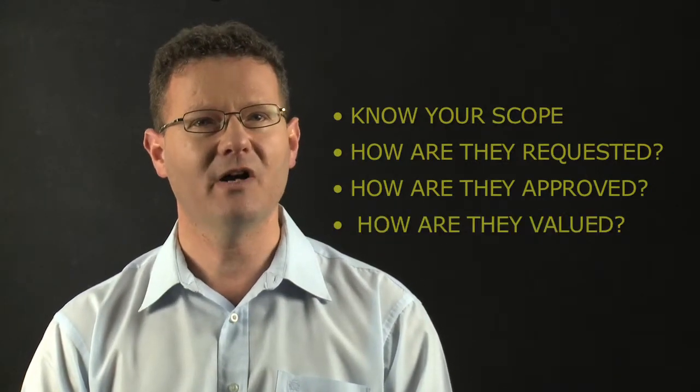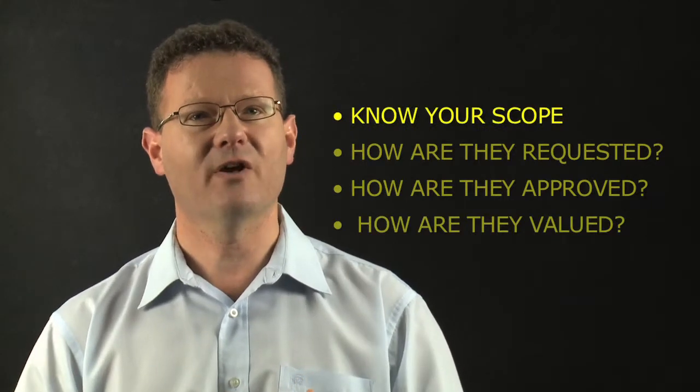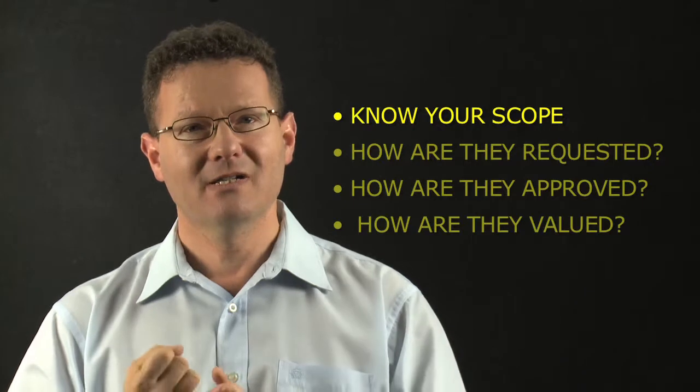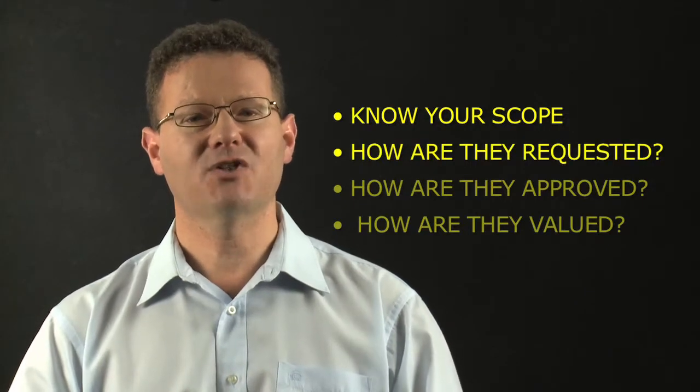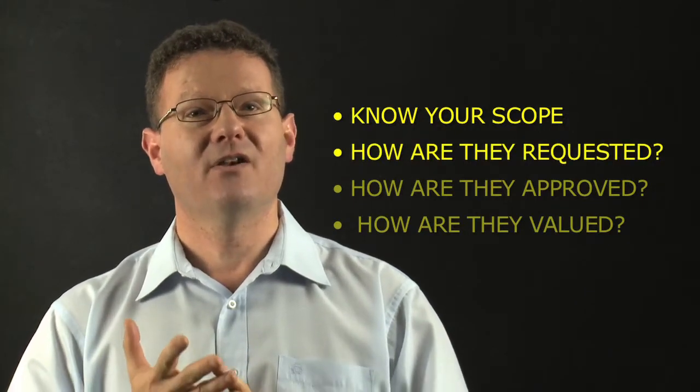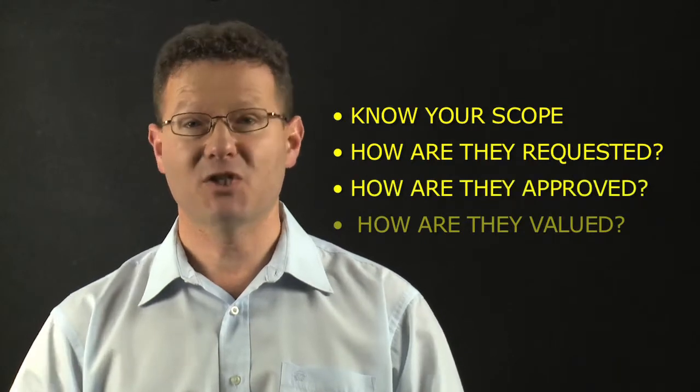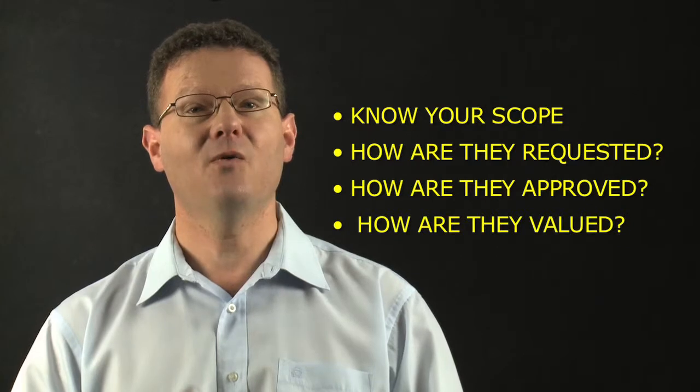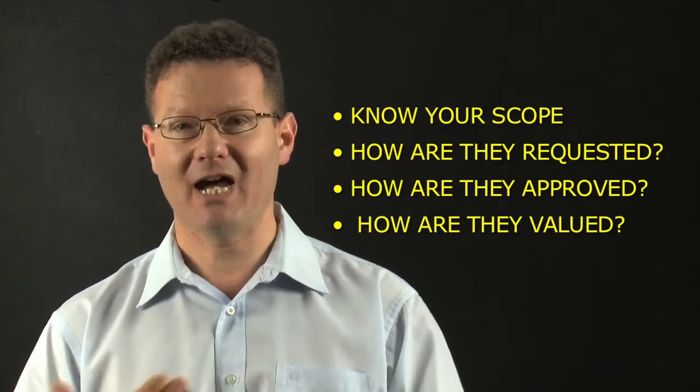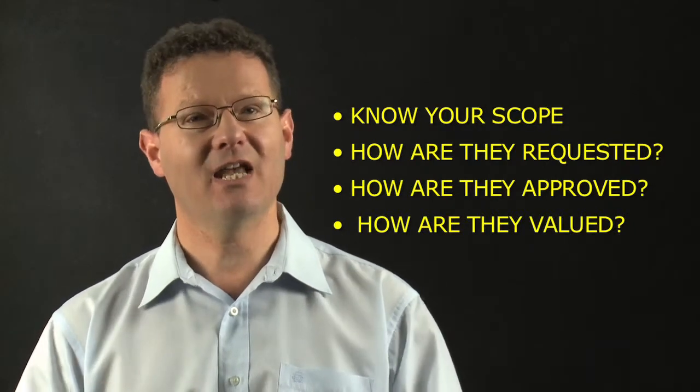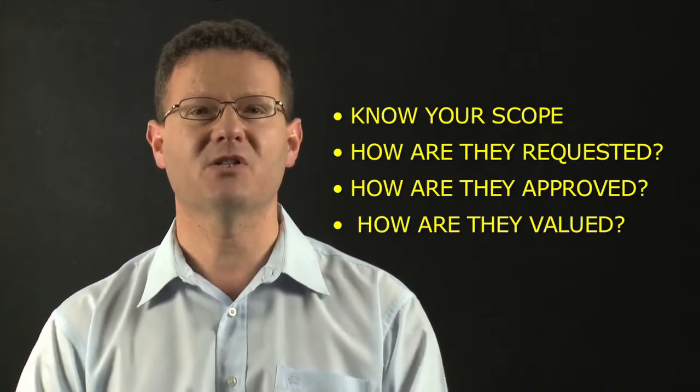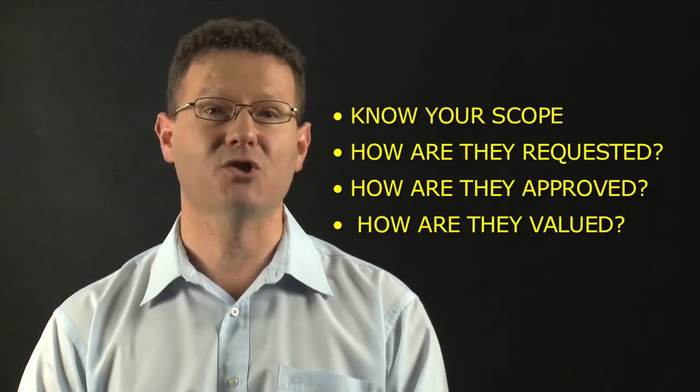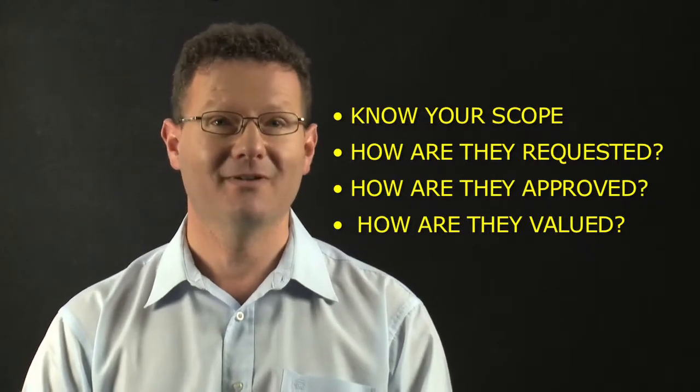So simply to summarize, know that it is a variation. So know that it is additional scope and understand your scope. Secondly, know how variations are requested. Thirdly, know how variations are approved. What is the approval process? And finally, know and agree how variations are to be valued. If you can get your head around those things and build it into your processes with your client, the arguments over variations should greatly reduce. Make it real in your business process and I'll see you next time.